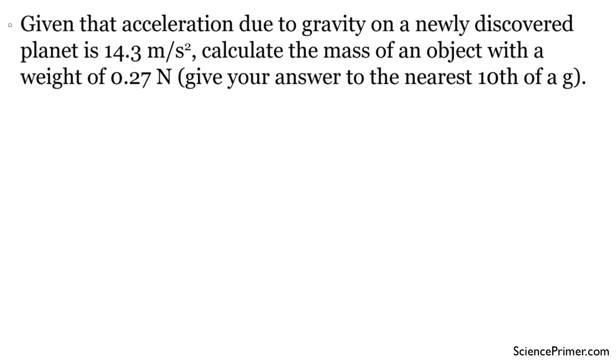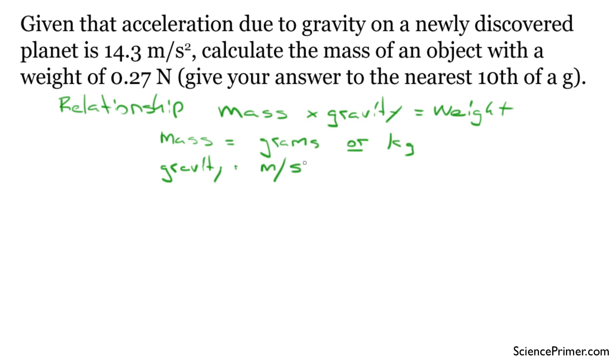So let's look at the things you need to know in order to solve this problem. The first thing is the relationship between mass, gravity, and weight. So mass times gravity equals weight. And the units for each of these: mass can be in either grams or kilograms. Remember, a kilogram is 1,000 grams. Gravity is a force. And the units of this is meters per second squared. And then finally, weight. In this case, it's given to us in newtons. So weight can be in newtons.